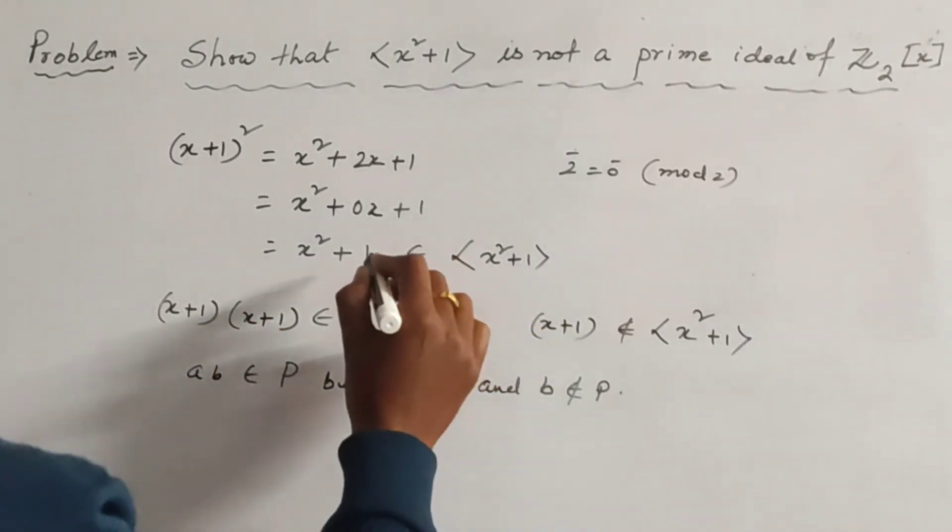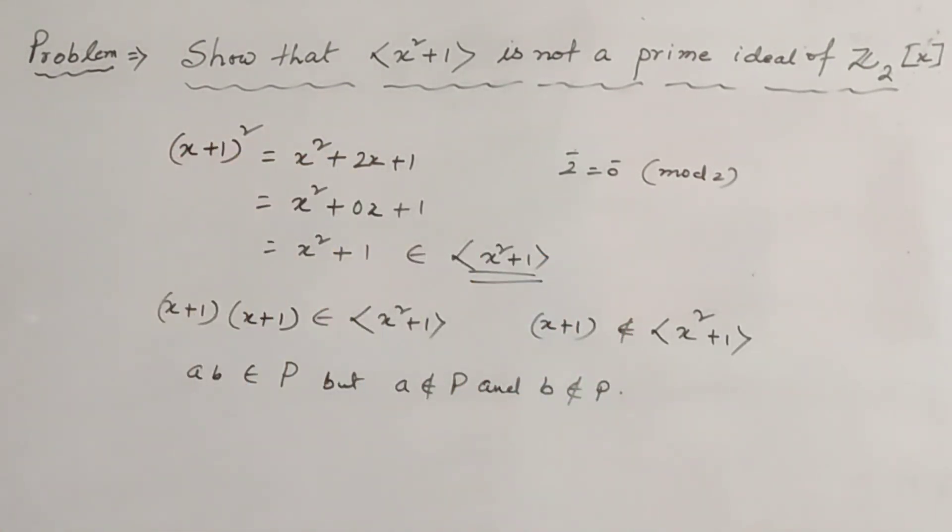So we see that this is not the prime ideal of Z₂[x].